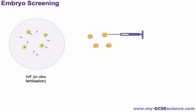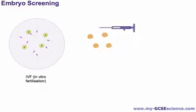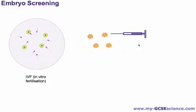At roughly the 8-cell stage, the embryos can be tested individually to see if they contain the alleles for a particular disease. You can remove one of the cells or some of the DNA and do testing to see whether they contain the alleles for a particular disease.